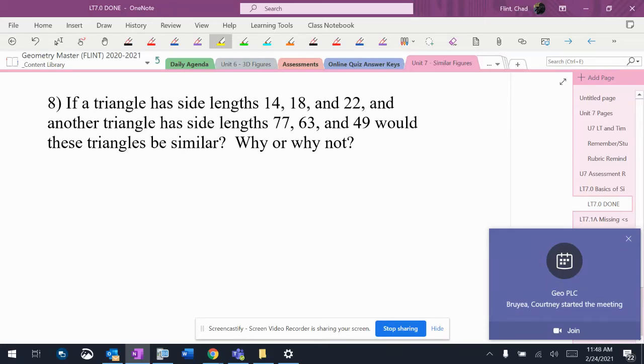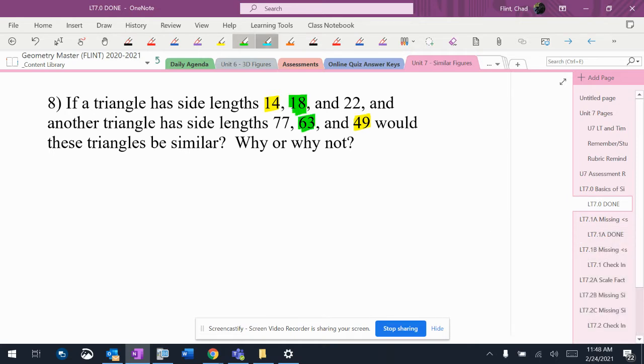We've got triangles here with some side lengths, so I've got to be careful. 14 and 49 are the two smaller ones, 18 and 63 are the middle ones, and 22 and 77 are the larger ones. So this is either side-side-side or no.